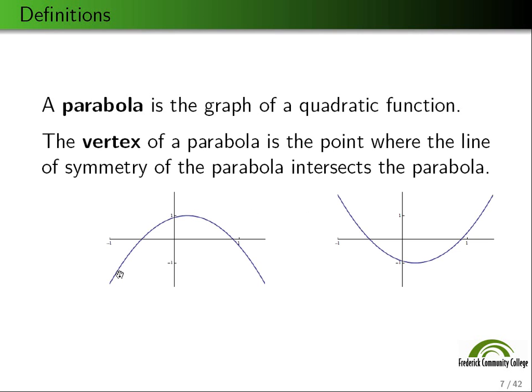So here's an example of two parabolas. A parabola is either open down, as this one does, or open up, as this one does. And so the line of symmetry is the line that splits these in half. And these points where the line of symmetry intersects the parabola, that is the vertex.